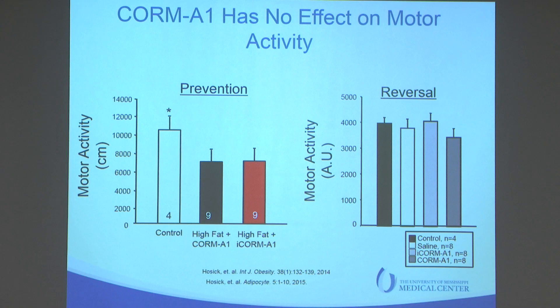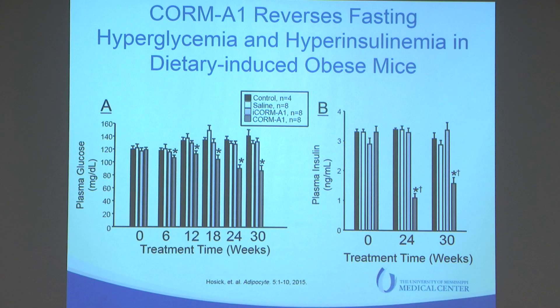We did a similar study where we reduced heme oxygenase 1, and when you reduce HO-1, the mice also lose weight but also become more active. So something is interesting — carbon monoxide can promote weight loss without any effect on activity, suggesting that high-fat feeding has an effect on activity that is on a pathway not touched by increases in carbon monoxide.